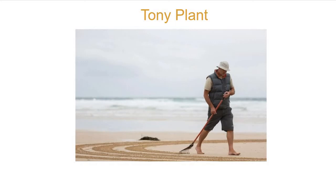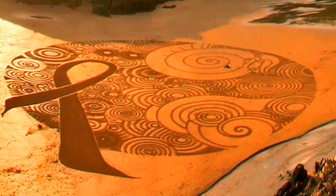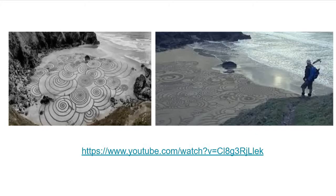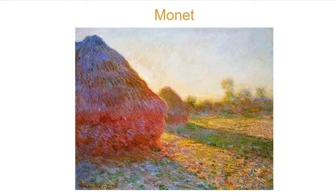Tony Plant goes down to the beach and he drags his rake around the beach, and as he does that he leaves these really cool designs in the sand. That's cool, and it takes a long time to make them — but that's not really why I'm showing him for time. The reason is he makes them and only has a short amount of time for them to exist, because then the waves come up and destroy his artwork. It's there for only a very short period of time.